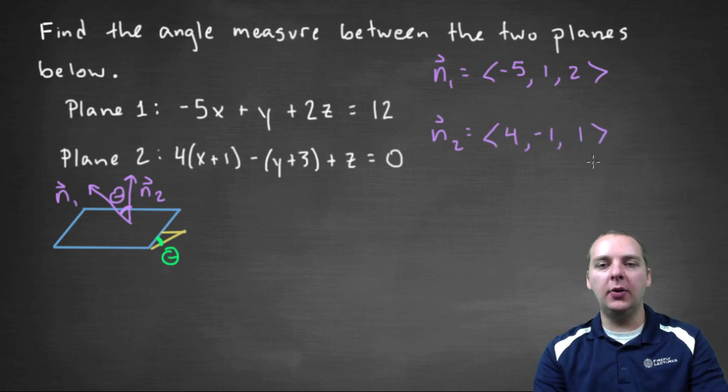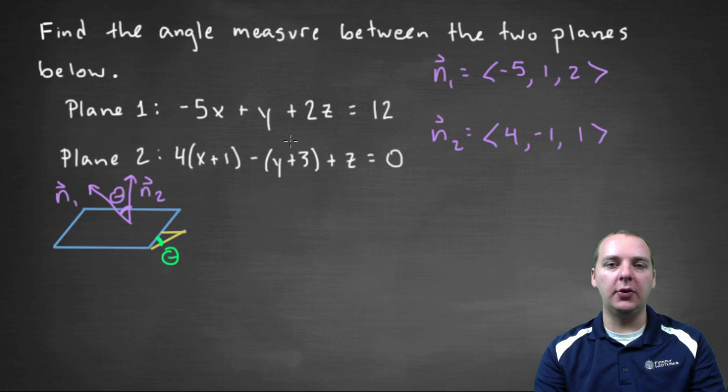A quick little side note, the one and the three and the twelve, those have no bearing on the normal vectors for these planes. You're only looking at the coefficients to find the normal vectors. So we can find the angle between these two guys, then we're done. That's theta, which is also our theta.